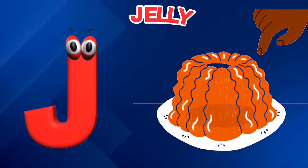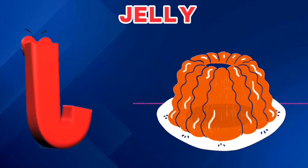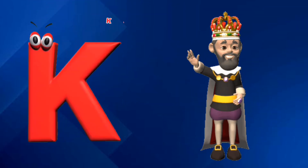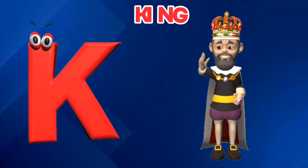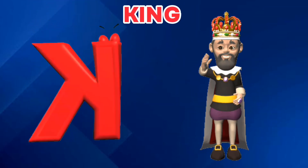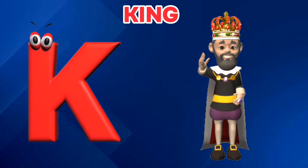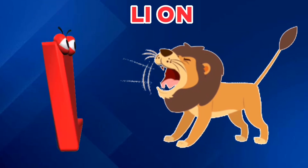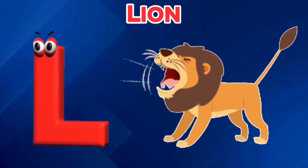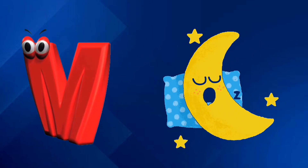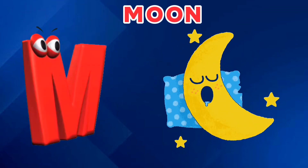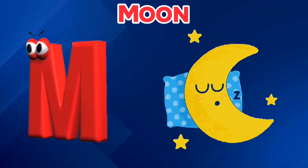J is for Jelly. J, J. Jelly. K is for King. K, K. King. L is for Lion. L, L. Lion. M is for Moon. M, M. Moon.